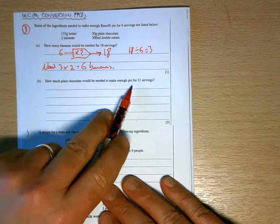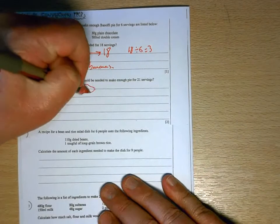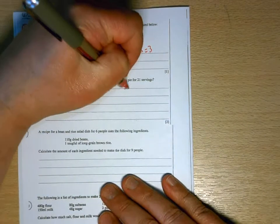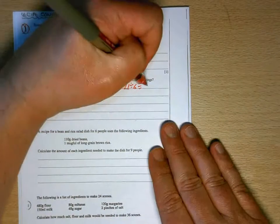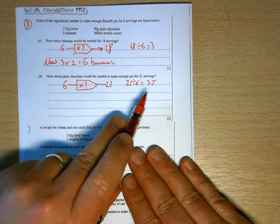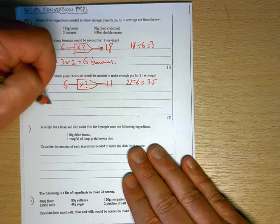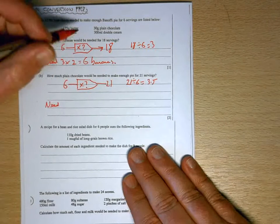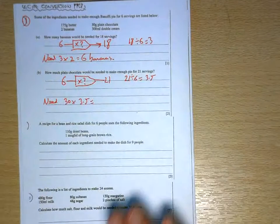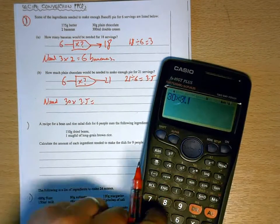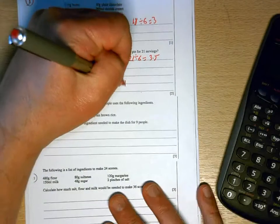For the second one we need to scale it up to 21. So we've got to go from 6 to 21. So 21 divided by 6 that would be 3 and a half. So we need to multiply everything by 3.5. They're interested in plain chocolate so I will need 30 times 3.5, 105 grams of plain chocolate.